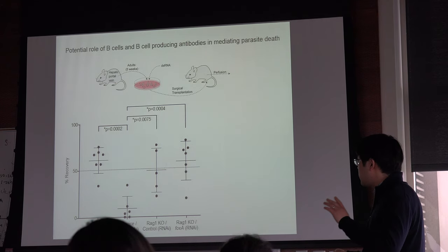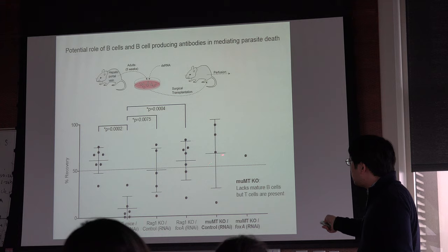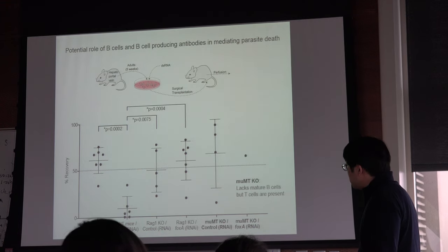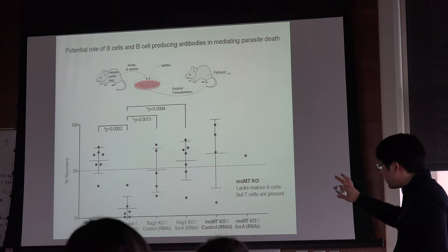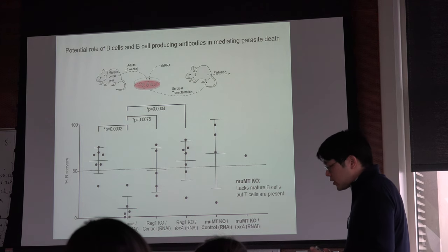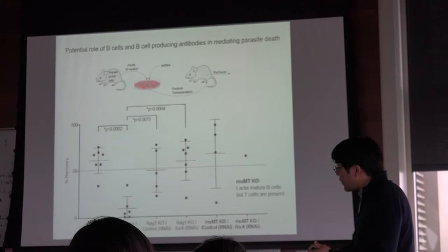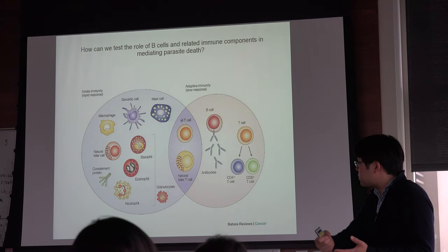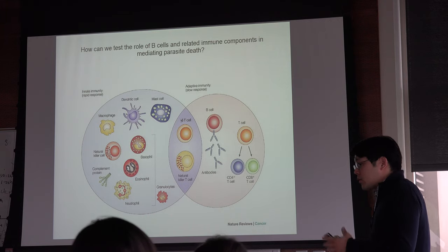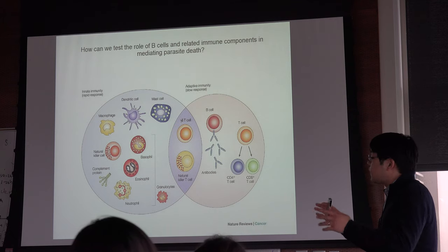There's another mouse strain called mu-MT, which lacks mature B cells but has T cells present. In preliminary results, in the mu-MT knockout mouse lacking mature B cells, FOXA RNAi parasites also show higher recovery, although this is just one mouse so far. Together these results suggest it may be the B cells, or the antibodies produced by B cells, that are responsible for killing the parasites in the absence of the esophageal gland — and this might be a specific way these parasites use the esophageal gland to evade the host's immune system.